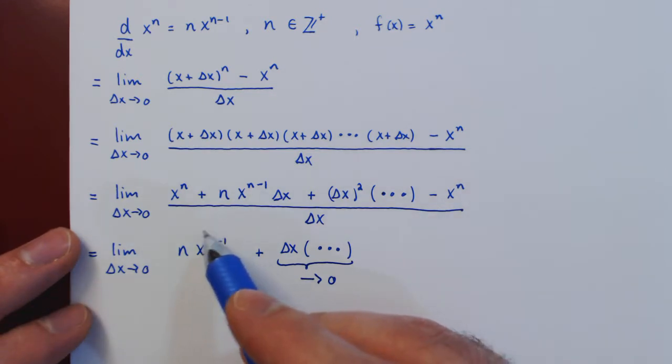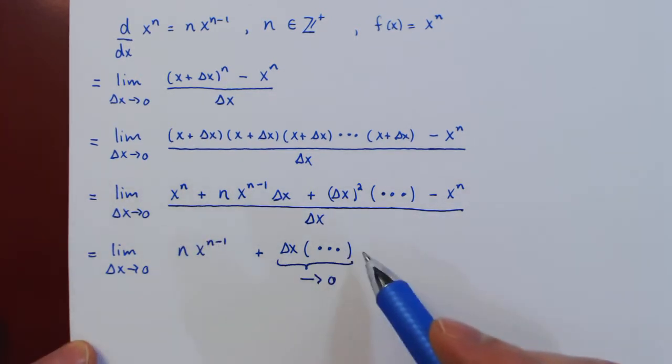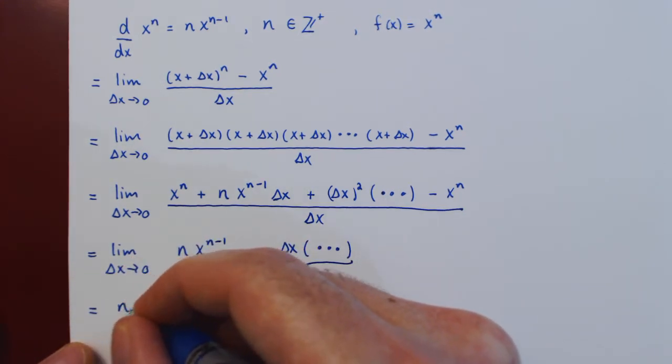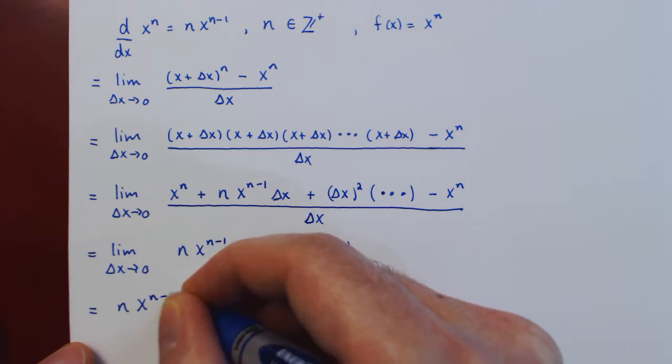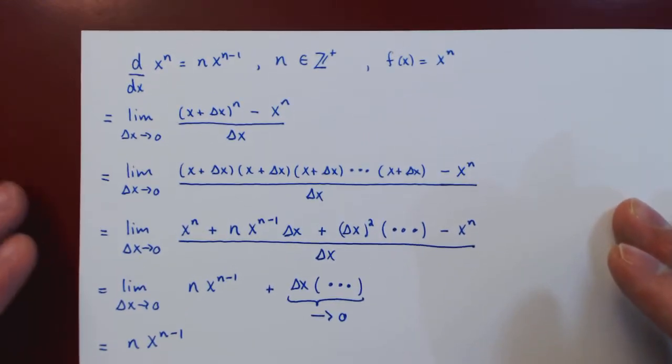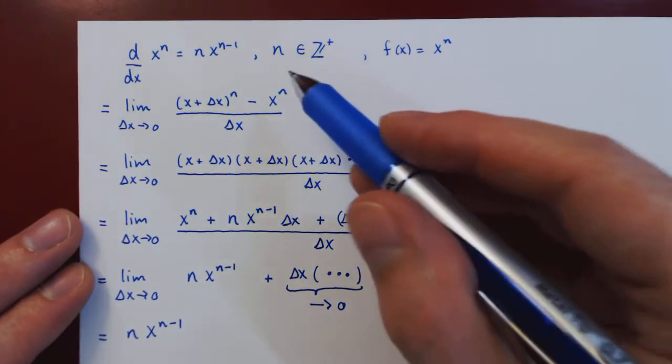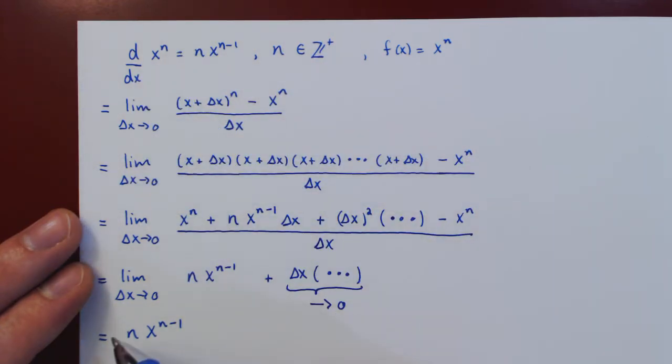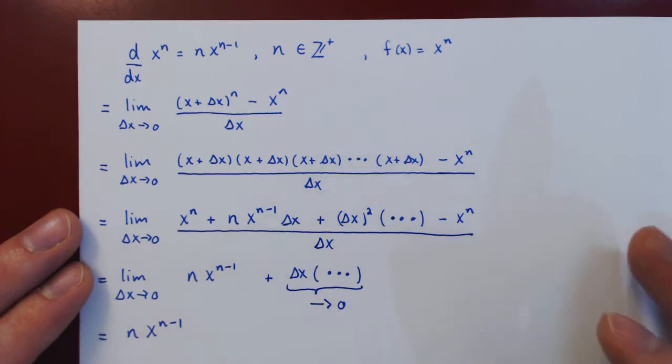So in the limit, as there is no delta x here, and as this piece shrinks to zero, we are left with n times x to the n minus one, which is what we were hoping to show, that for a positive integer, the derivative of x to the n with respect to x is n times x to the n minus one.